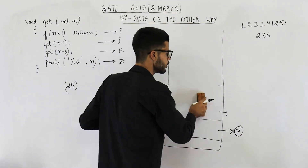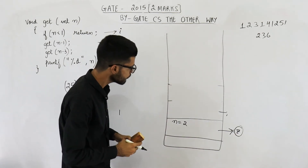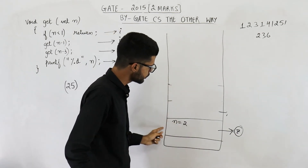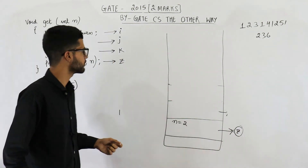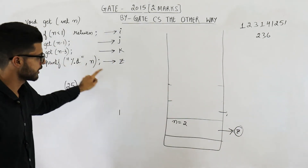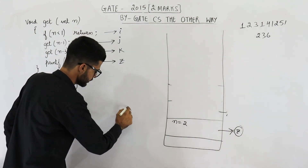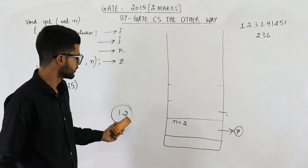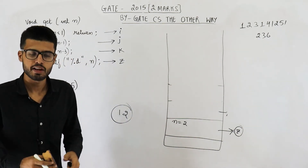So get(minus 1) returns without printing anything. And now you will return to get(2) and continue from line z, which is this one. So print n — that means 2 will be printed. So this is the output if you call get(2).